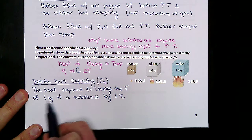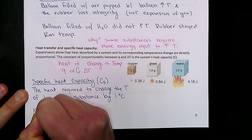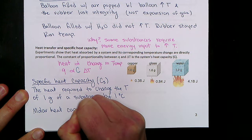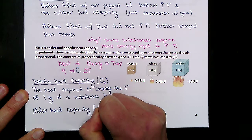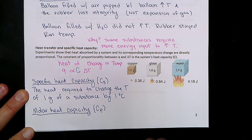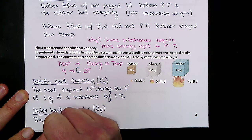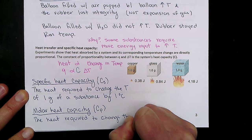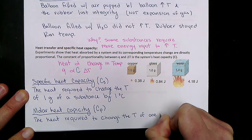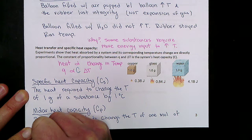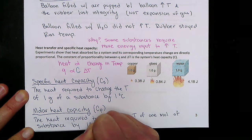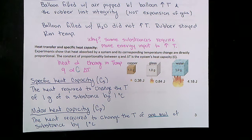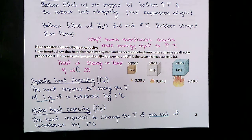Specific heat capacity is measured in joules per gram per degree Celsius. You can also have a molar heat capacity, abbreviated Cp, which is the heat required to change the temperature of one mole of a substance by one degree Celsius. The only difference is whether you're looking at one gram versus one mole of a substance.